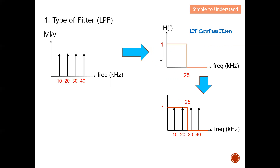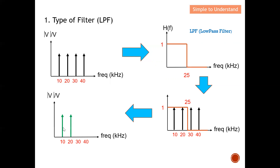Putting the two diagrams together, you can see that the 10 kHz and 20 kHz components will be allowed to pass, while 30 kHz and 40 kHz will be removed. The components within the pass band have a magnitude of one — their characteristics are unchanged — while the components in the stop band have a magnitude of zero, meaning they are removed. At the output, we can only see two components: 10 kHz and 20 kHz. This is the first example of a low pass filter.